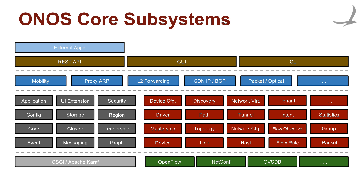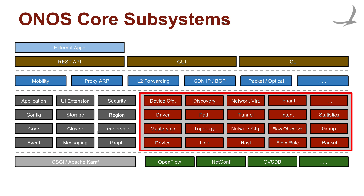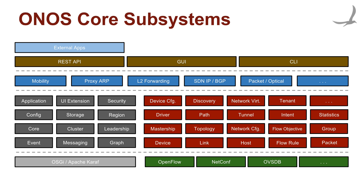Some services are entirely domain-agnostic, meaning that they have nothing to do with network control but instead only serve as the distributed infrastructure facilities. These subsystems are depicted on the left and in grey. The rest, which are specific to the domain of network control, are depicted on the right and in red. The intent here is not to dwell on each individual subsystem, but instead to make the point that the ONOS core is not a monolithic entity but a modular one, designed to be extended and tailored if needed.